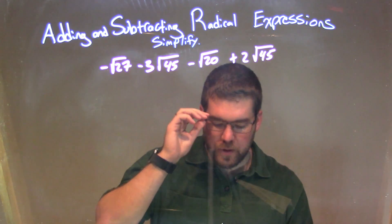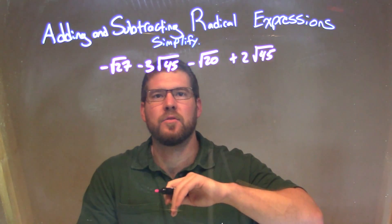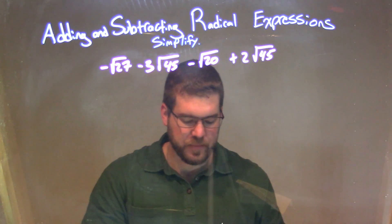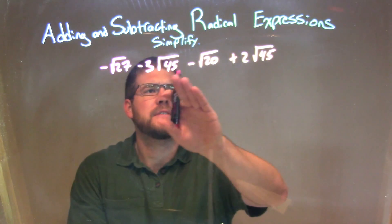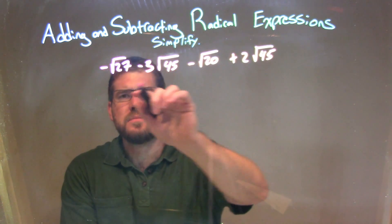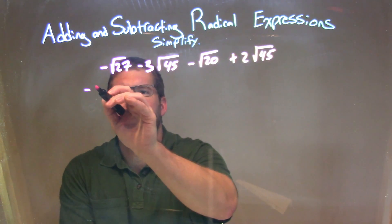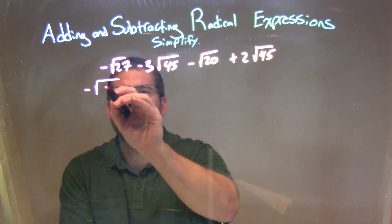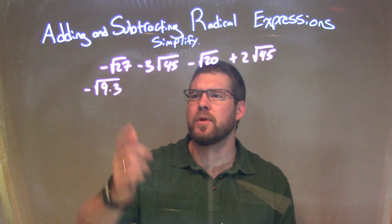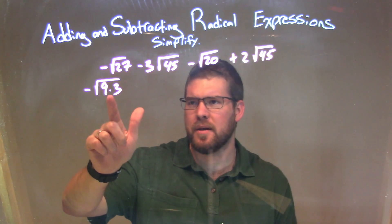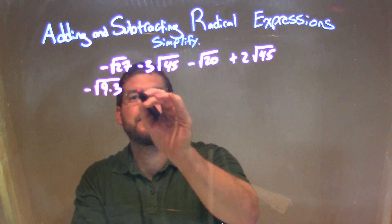What I'm doing here is I'm going to see if I can simplify each one of these square roots. Let's see if we can break this down. So the square root of 27 — I know that's 9 times 3, and the reason why I'm choosing 9 times 3 specifically is I know I can take the square root of 9.